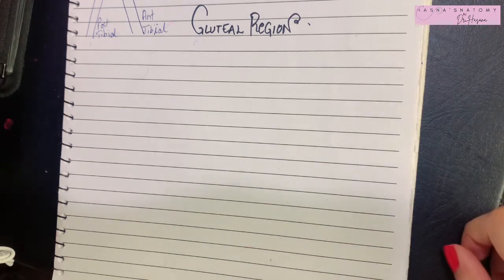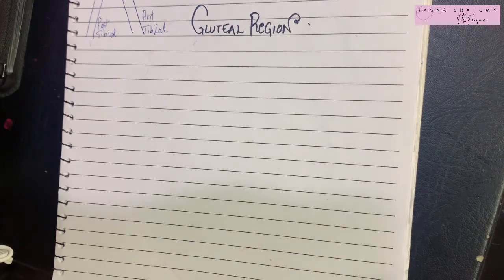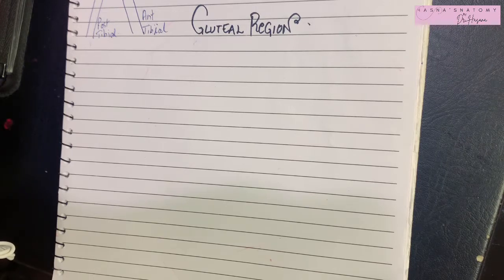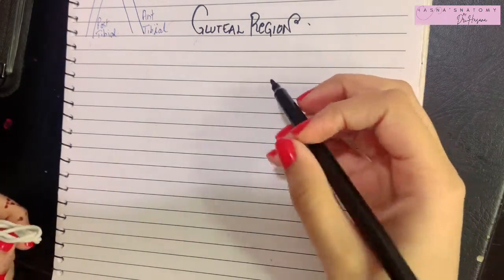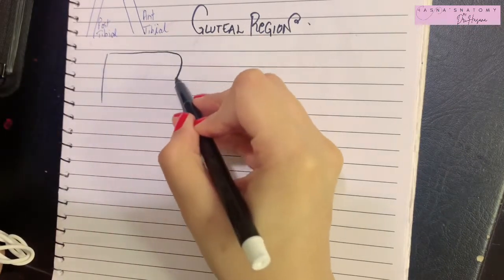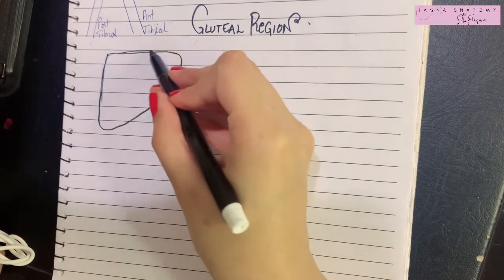The gluteal region lies on the side and the back of your pelvis. To begin with, the gluteal region basically consists of a large amount of subcutaneous fat. It has a superficial fascia and deep fascia like all other regions, and then it has multiple muscles. The major, most important muscle is the gluteus maximus, which covers the majority of the gluteal region.